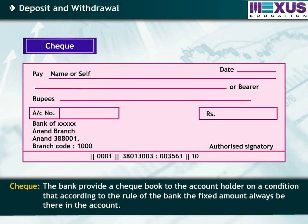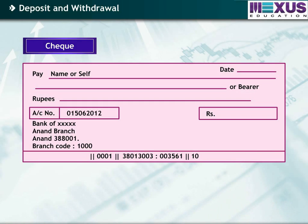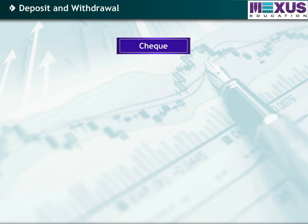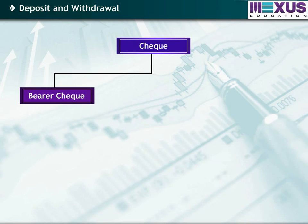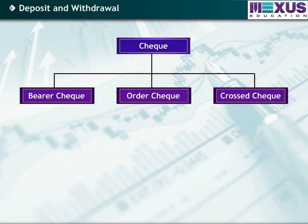The bank provides a checkbook to the account holder on the condition that, according to the rules of the bank, a fixed amount must always be there in the account. In a check, it is necessary to write the date, amount in figures and words in the proper column, and the account holder must sign at the bottom of the check. There are mainly three types of checks: bearer check, order check, and cross check.